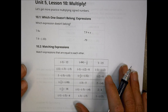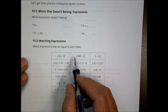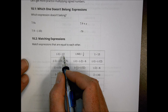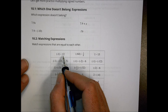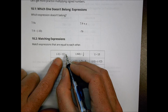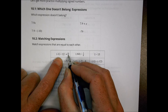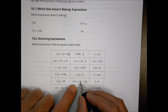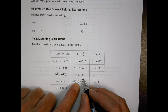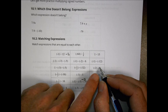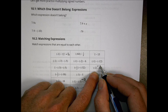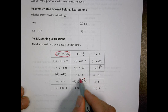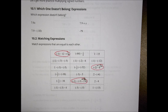Alright, so looking over here at this first section on matching expressions — they want you to match the expressions that are equal to each other. To do this, you need to multiply out the different numbers to see what you come up with. For example, negative 1 times 12 is negative 12. I can also see that 3 times negative 4 is also negative 12, and negative 2 times 6 is also negative 12. So those three all go together.